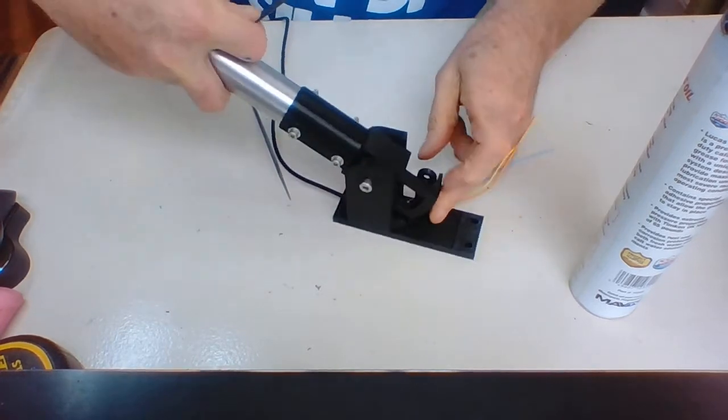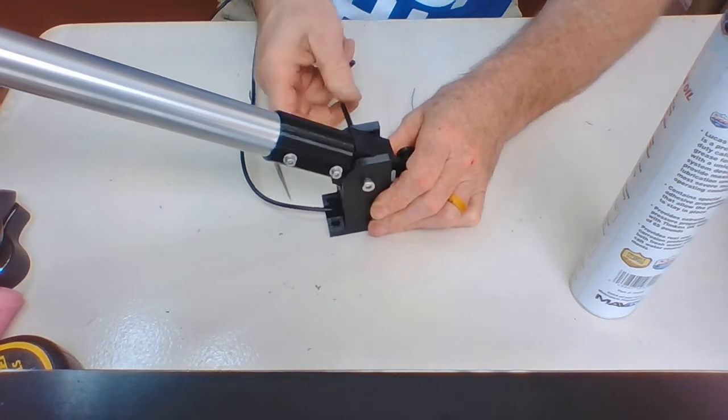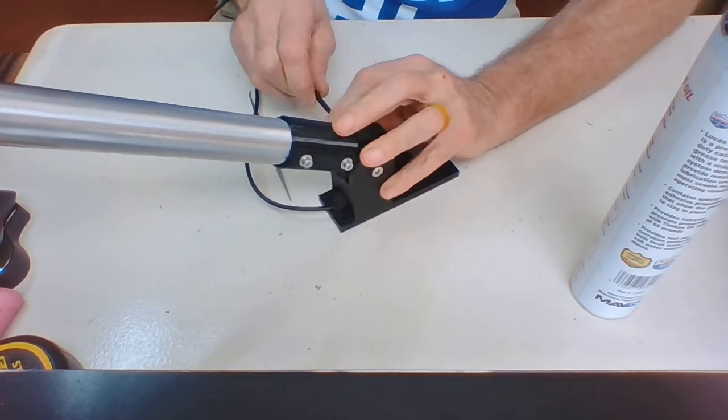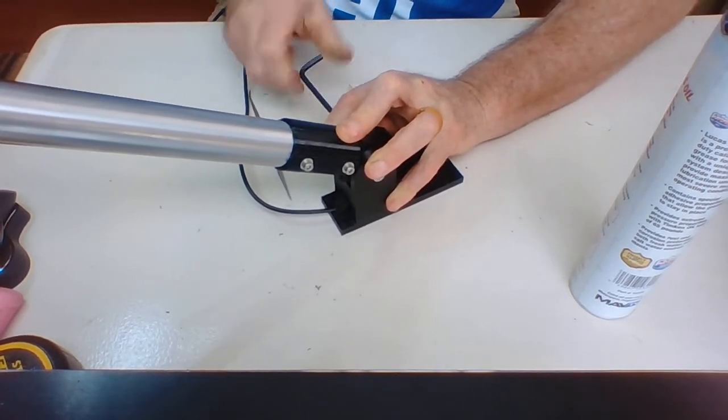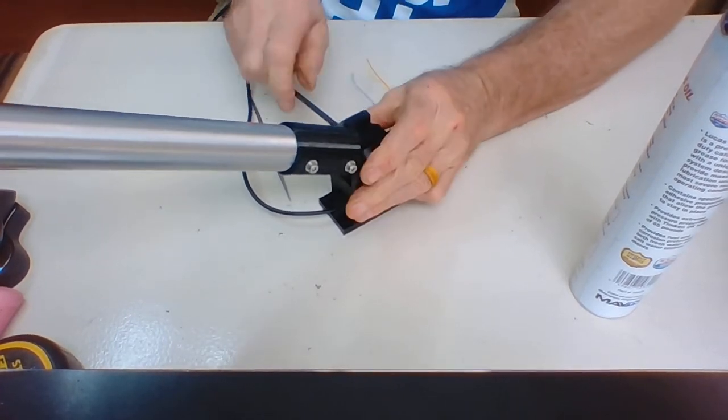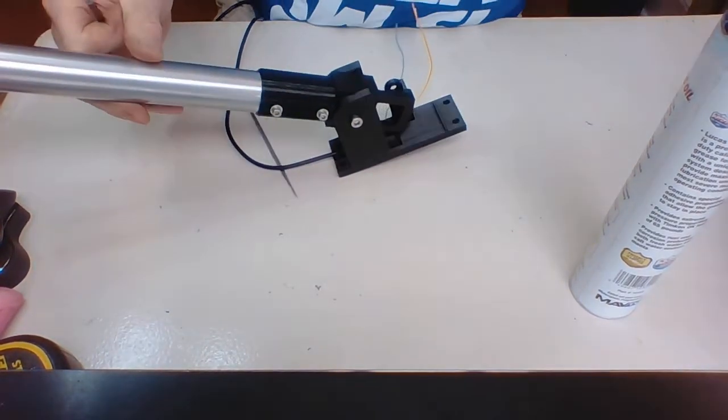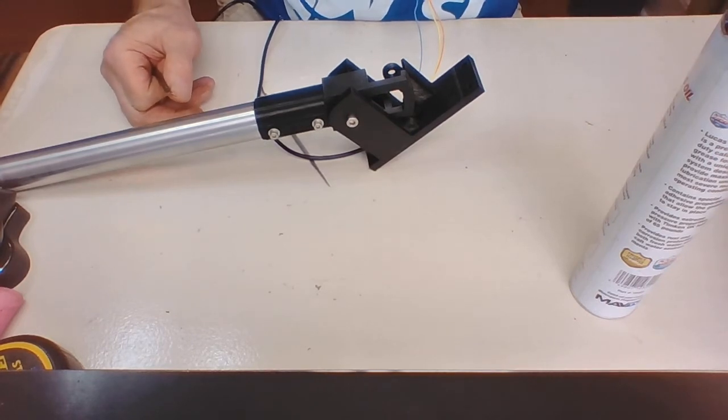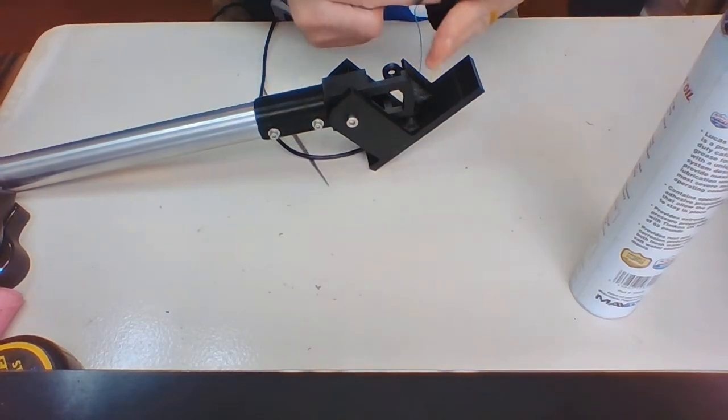So once we get these in there, we'll get that spring up. That's going to hold that up in the up position because we don't have the weight of the head right now. I'll finish getting that screwed in. And you've got to hold both ends. Once it gets to a certain point, you have to put an Allen wrench into both sides to keep the bushing from spinning.